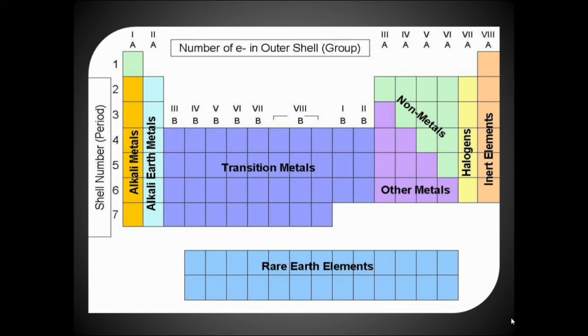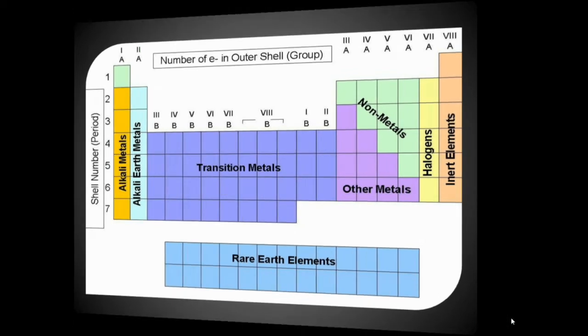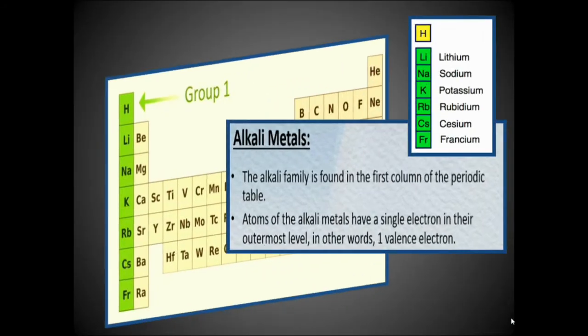Groups 1B to 8B are the transition elements, also called d-block elements. At the bottom of the periodic table, the rare earth elements are the outer transition elements, which are f-block elements. Group 1A, the alkali metals, includes lithium, sodium, potassium, rubidium, cesium, and francium. Alkali metals are found in the first column and have only one electron in the valence shell.